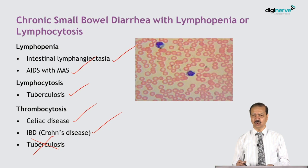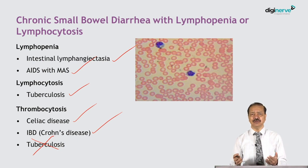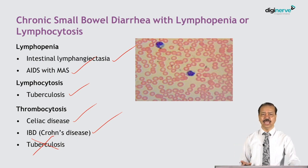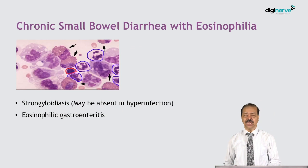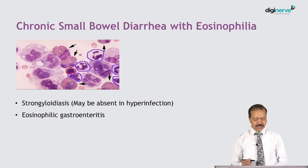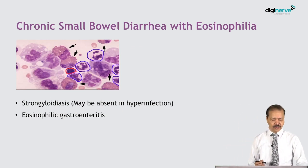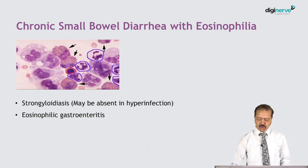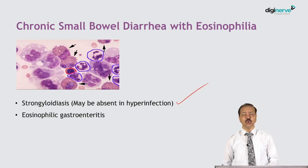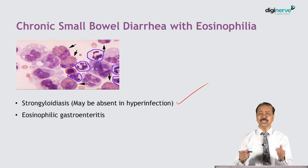In the acute stage, celiac and IBD patients may have reversible hyposplenism, which leads to an increase in platelet count. If somebody has chronic small bowel diarrhea with eosinophilia, suspect Strongyloid hyperinfection.